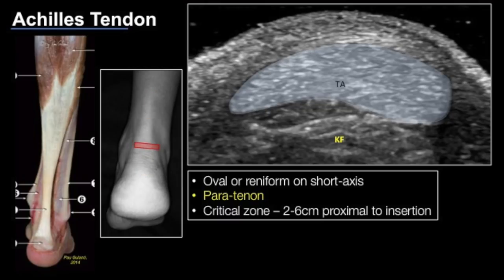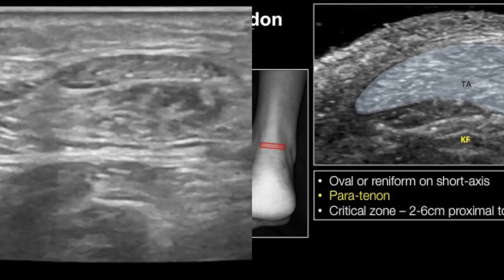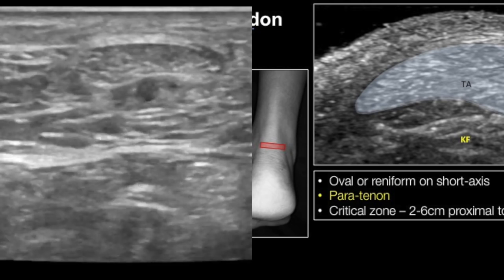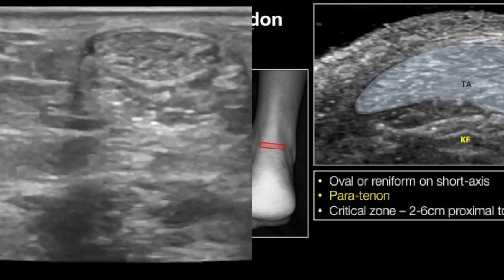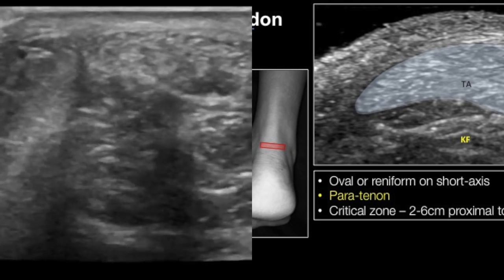On the transverse view or short axis, the Achilles tendon is seen as an oval or reniform structure with a typical brush-border appearance. The normal tendon does not have a tendon sheath; however, it is surrounded by connective tissue known as paratenon. The paratenon appears as a thickened or hypoechoic halo when there is tendinosis or a tendon tear, and it generally consists of blood vessels which supply nutrients to the tendon.